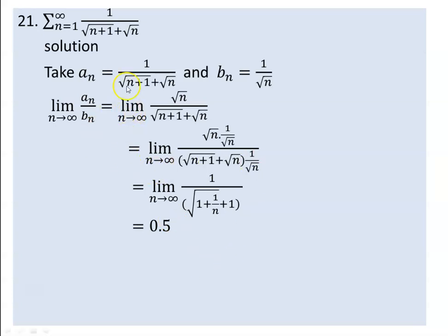0.5 is a finite nonzero number — so the limit comparison test applies. This is the series' nature of convergence. Since the comparison series is divergent by the p-series test, the given series is also divergent. So this is the limit comparison test result.